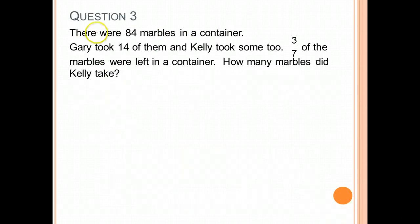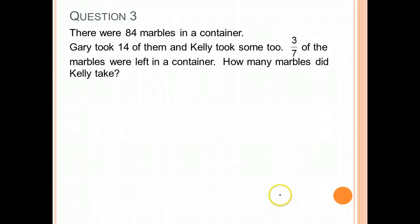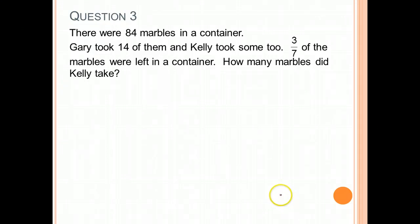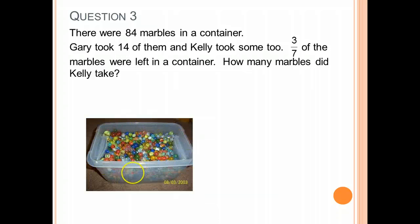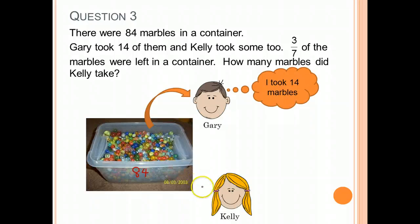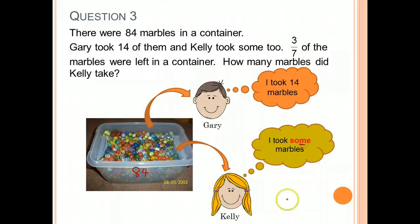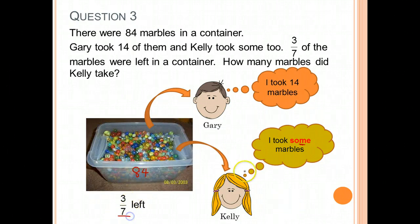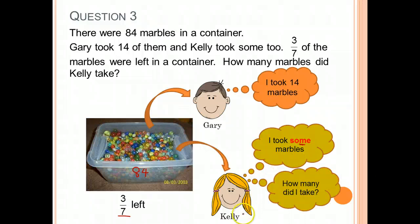Welcome back. Let's look at Question 3. There were 84 marbles in a container. Gary took 14 of them and Kelly took some too. 3/7 of the marbles were left in the container. How many marbles did Kelly take? We know the container has 84 marbles. Gary took 14 and Kelly took some, but we do not know how many Kelly took. We are told that 3/7 of the marbles were left after both took their share.